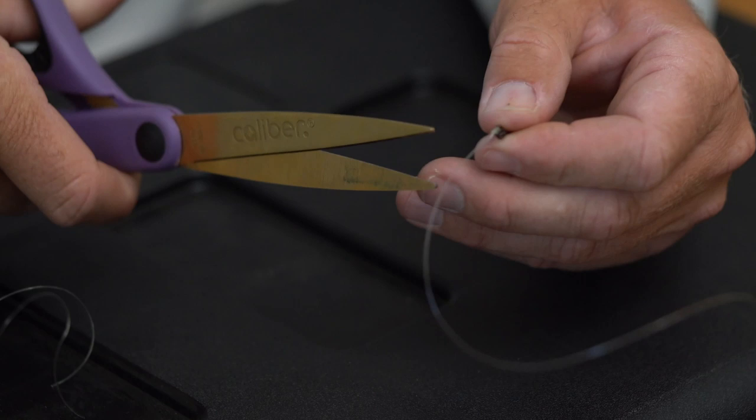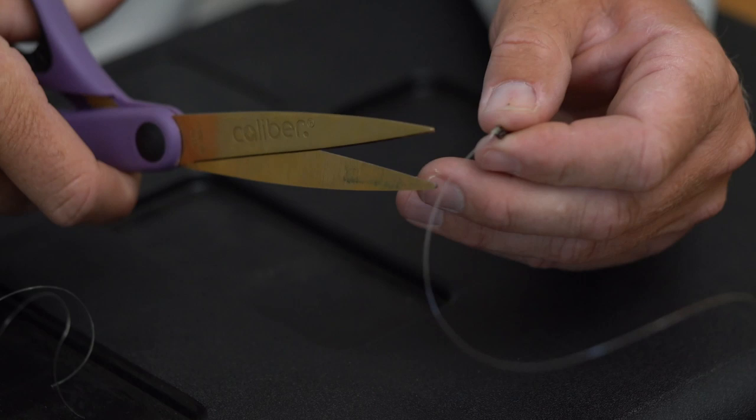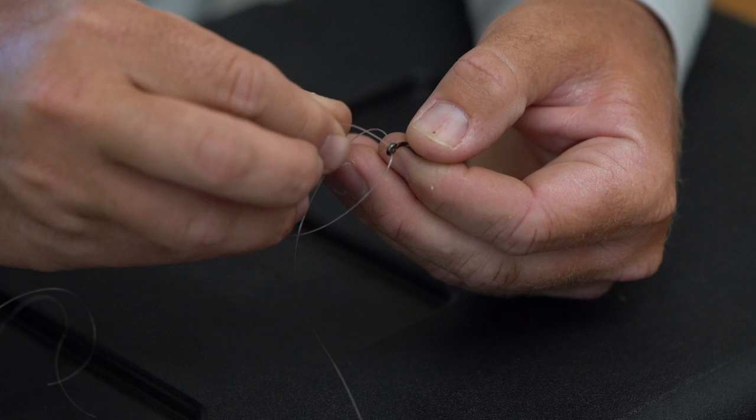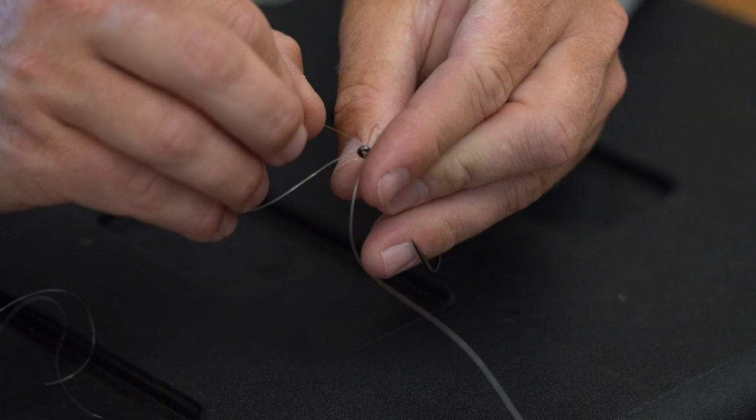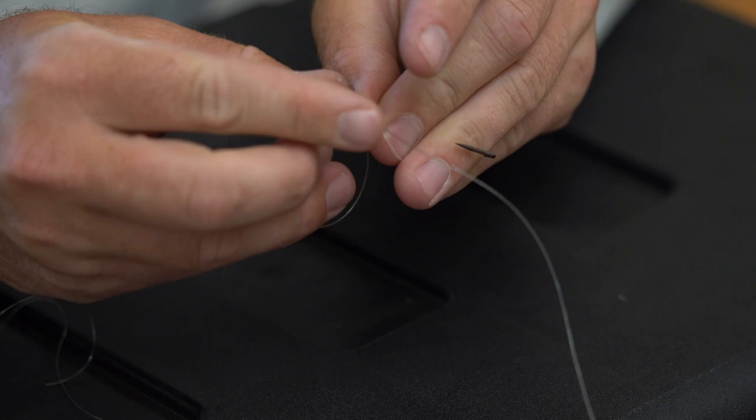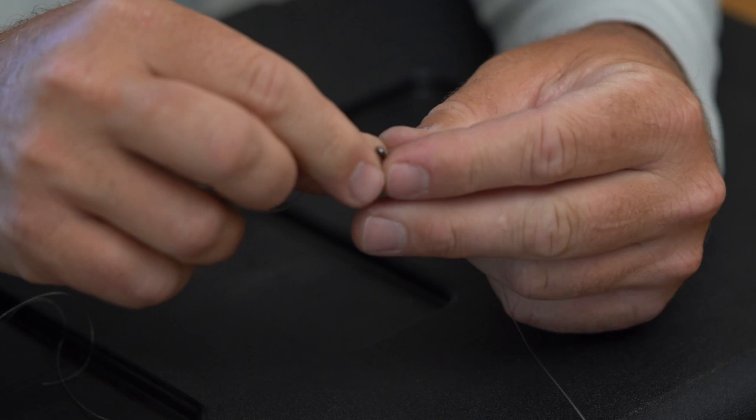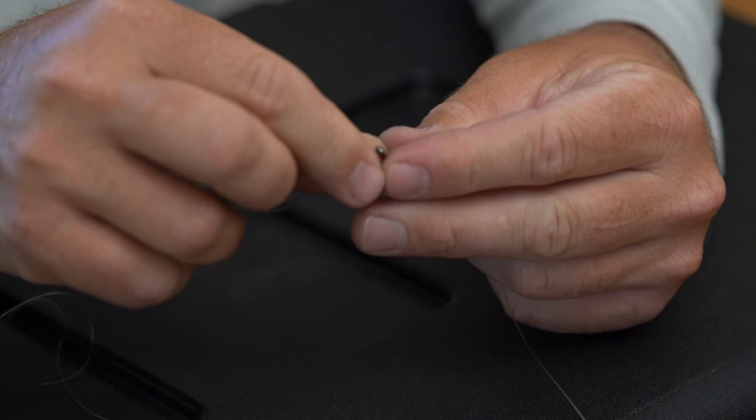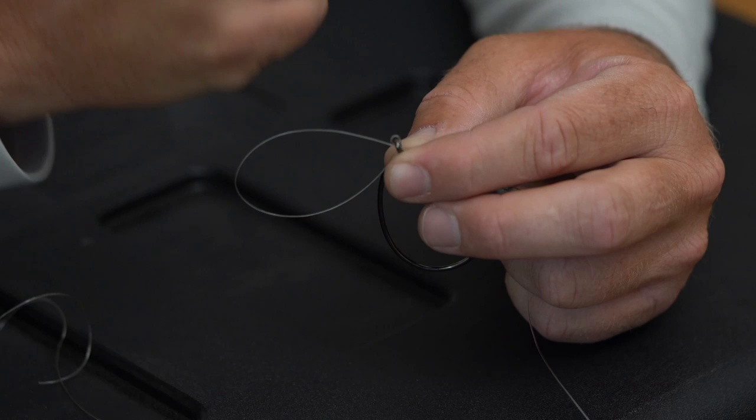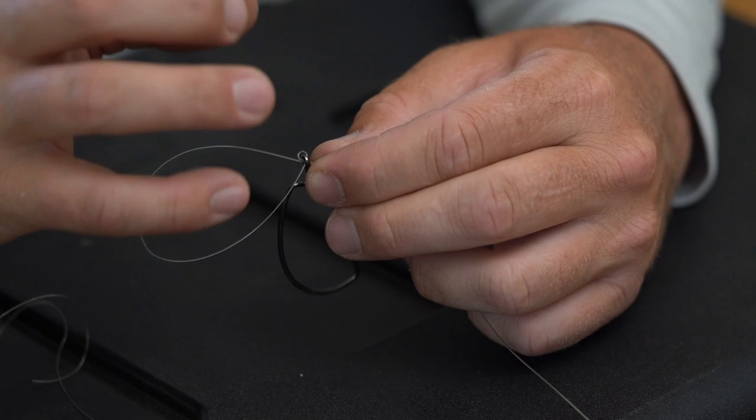Now when you pull it tight, be mindful that your main line and your tag line both come out of the same side of the loop. If they come out on opposite sides you have a slipknot. But if they're on the same side you have a palomar and it is a very strong knot. We use this knot for everything. The only variation to that knot is if we're tying it in straight braided line. In straight braided line we go through the eye, back around, through the eye again.